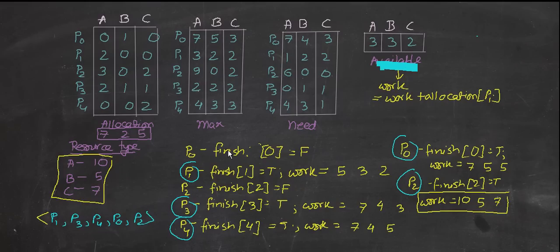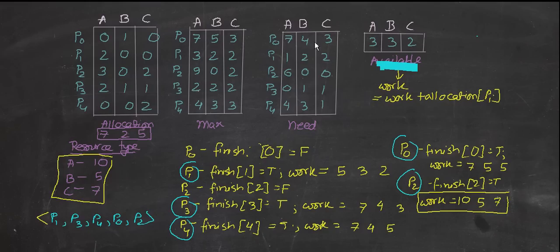There are five processes: P0, P1, P2, P3, and P4. Starting with P0 — P0 requires 7,4,3 but we only have 3,3,2 available, so it's not possible to execute P0 right now. The finish flag for P0 is set to false and we'll come back to it in the loop. If after looping we still can't execute all processes, the system is in a deadlock state.